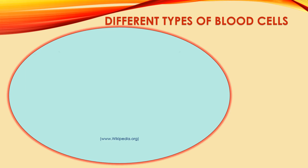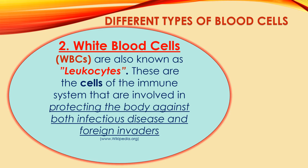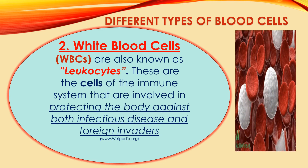Number two: white blood cells, or WBC, also called leukocytes. They are the cells of the immune system involved in protecting the body against both infectious disease and foreign invaders.